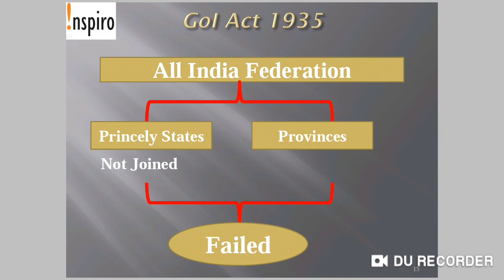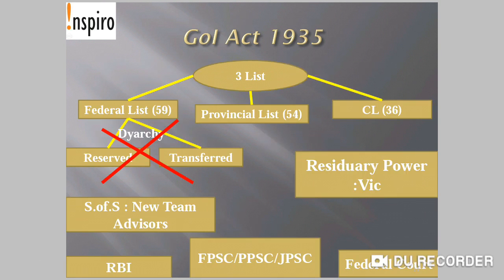Government of India Act 1935 is very important because it brought an All-India Federation idea into the Indian setup, including both princely states and the provinces. But the princely states did not join, so this All-India Federation provision of the Government of India Act 1935 was not realized. Three lists of subjects were constituted: the Federal List with 59 subjects, the Provincial List with 54 subjects, and the Concurrent List with 36 subjects.